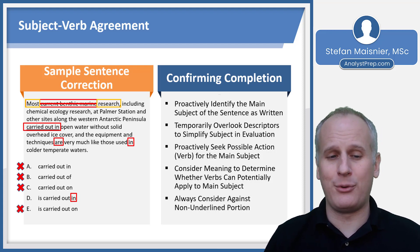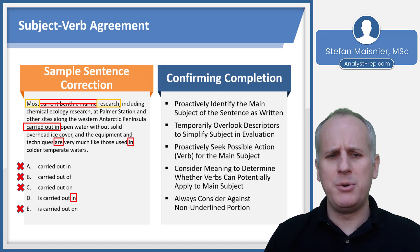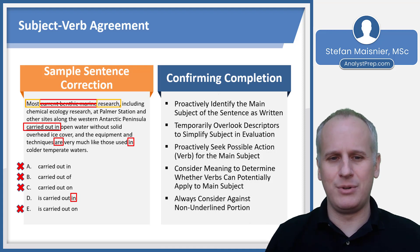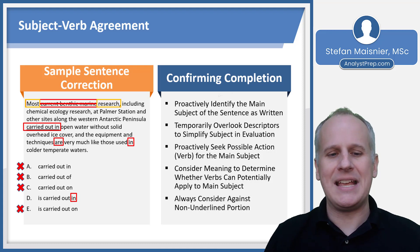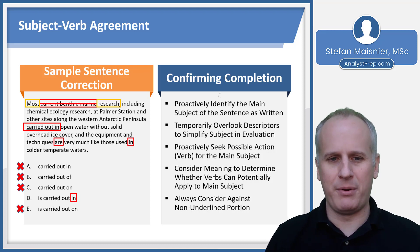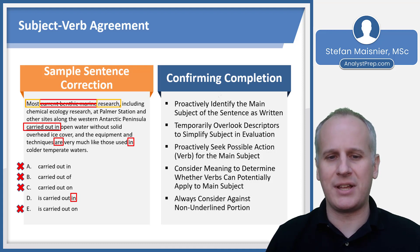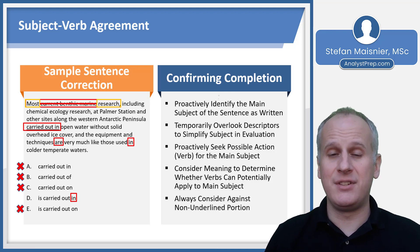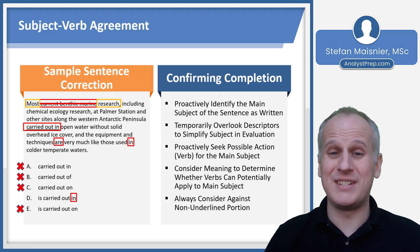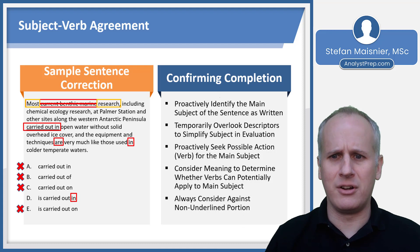As the final step before selecting D, we read the whole thing: 'Most current benthic marine research, including chemical ecology research at Palmer Station and other sites along the Western Antarctic Peninsula, is carried out in open water without solid overhead ice cover, and the equipment and techniques are very much like those used in colder temperate waters.' That captures the intended meaning, gives the research something to do, and makes a complete sentence — whereas the original was, oddly enough, a very long fragment.